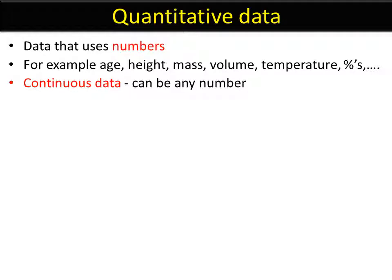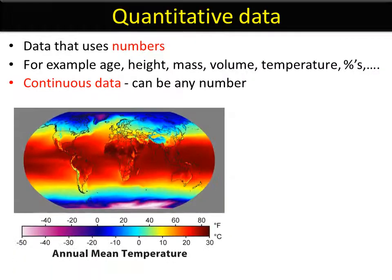Continuous data can be any number, whether it's got a decimal point or a plus or minus in it. For example, this is the annual mean temperature of planet Earth. If you look at the centigrade scale around the equator, we're going between 20 and 30 degrees. It can also be a minus number temperature, because if you look at Antarctica, it's getting close to minus 40, minus 50 degrees.